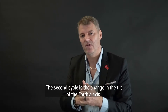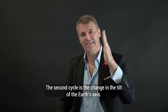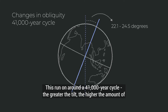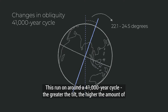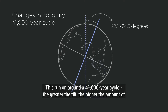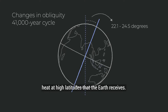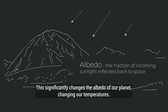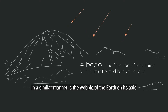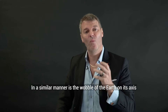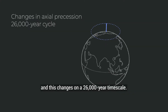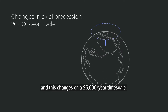The second cycle is the change in the tilt of the Earth's axis, which runs on around a 41,000-year cycle. The greater the tilt, the higher the amount of heat at high latitudes that the Earth receives. This significantly changes the albedo of our planet, changing our temperatures. In a similar manner is the wobble of the Earth on its axis, and this changes on a 26,000-year timescale.